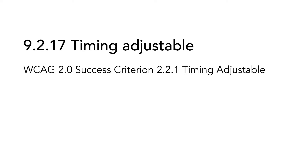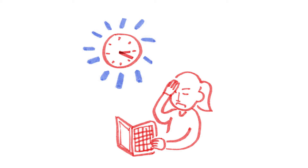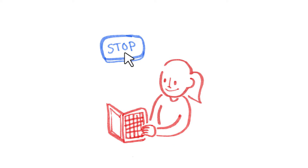9.2.17 Timing Adjustable is based on WCAG 2.0 Success Criterion 2.2.1 Timing Adjustable. Sometimes there is a need to use time limits. For example, on a banking website, users need to get logged out for safety reasons. A ticket machine might need to unblock seats if the user walks away without completing the purchase. Time limits are a problem for users that need more time than is allowed. Therefore, it is essential that the user can do something about the time limit.